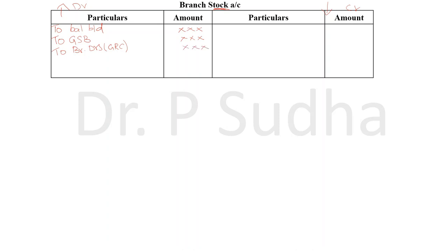The branch will make sales — either cash sales or credit sales. When sales happen, goods go out of the business, so the value of stock comes down. We record it in the credit side: by cash, and by branch debtors for credit sales. Write the amount in the amount column.